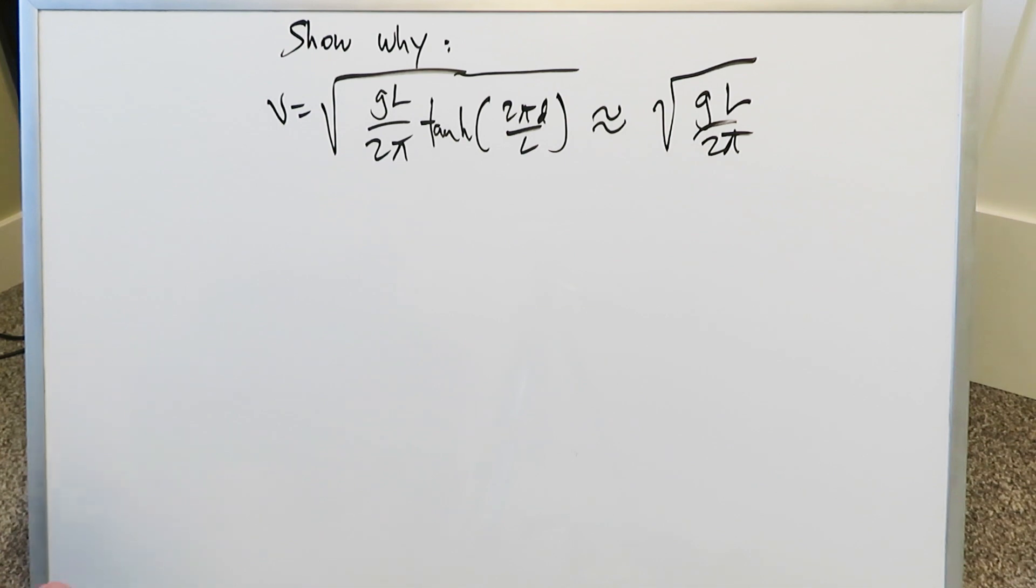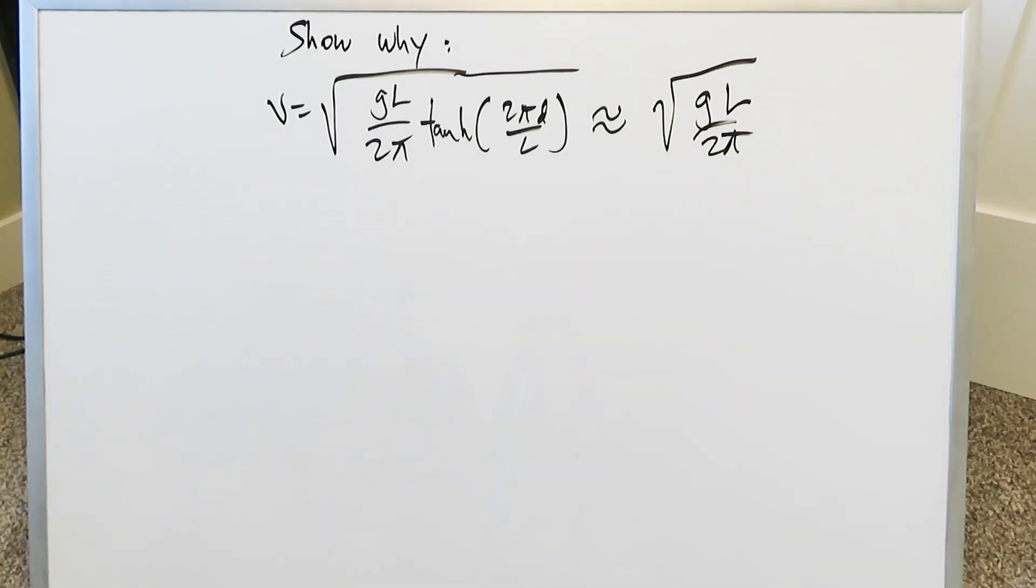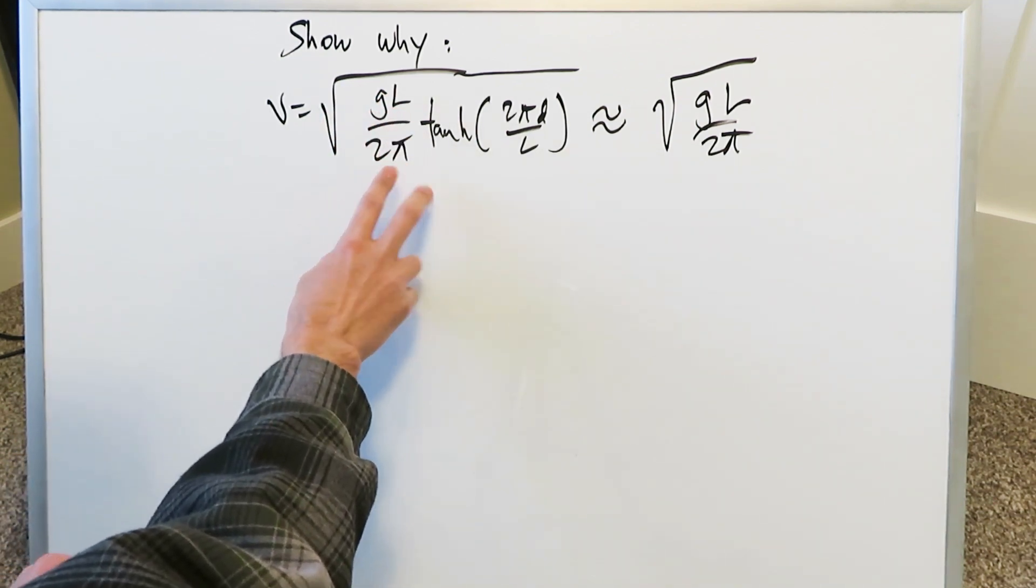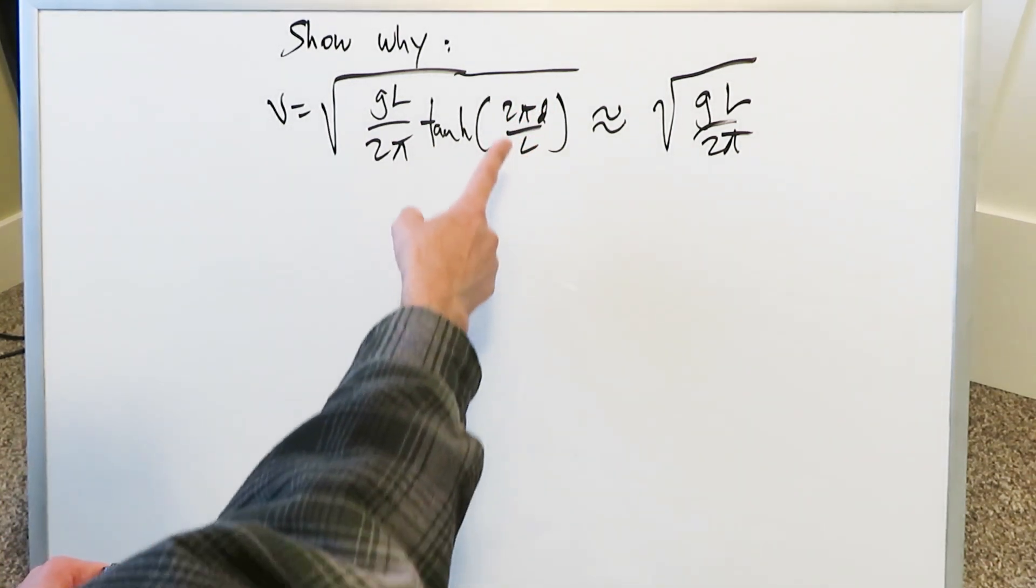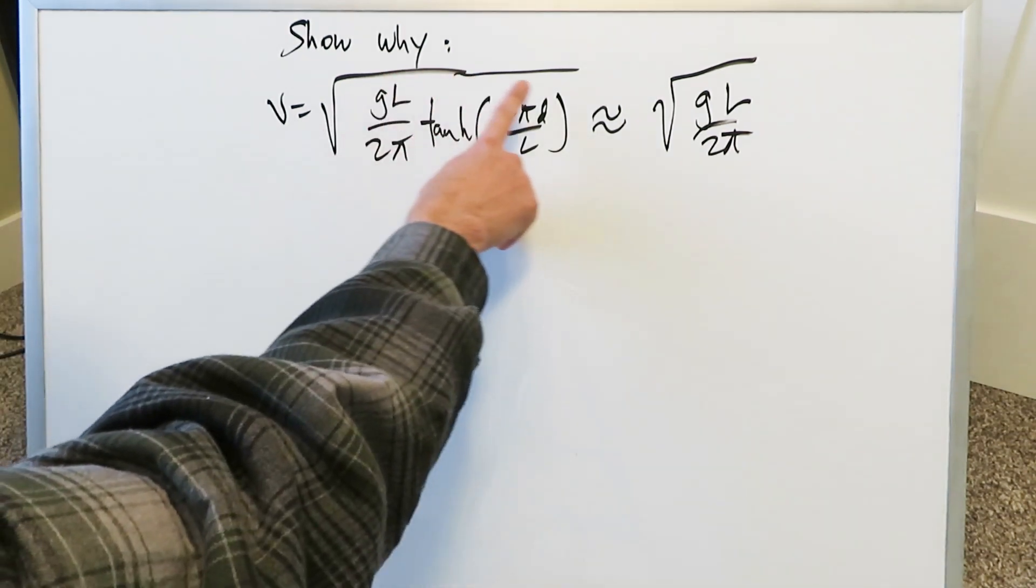It's to do with the hyperbolic functions. We have a specific equation here for the velocity of an ocean wave in deep water. Gravity times the wavelength of that wave, divided by 2π, multiplied by hyperbolic tangent, and then you have a 2πd over L, where d here represents the depth of that wave with regards to the ocean floor. All of this is under the square root.